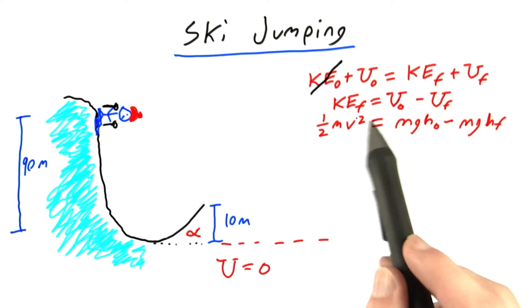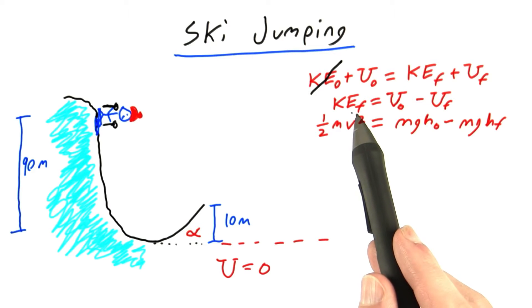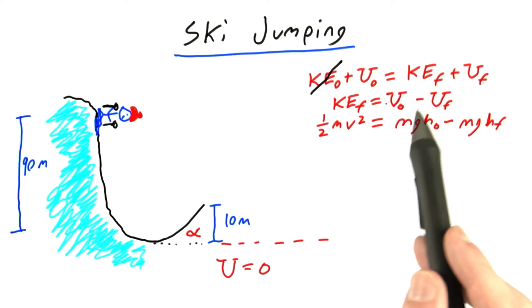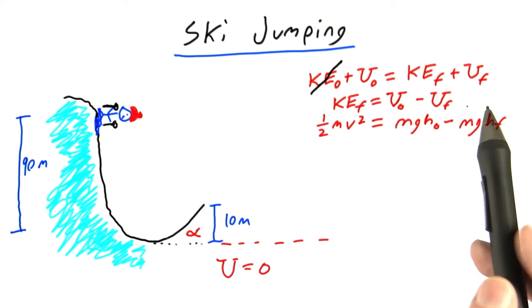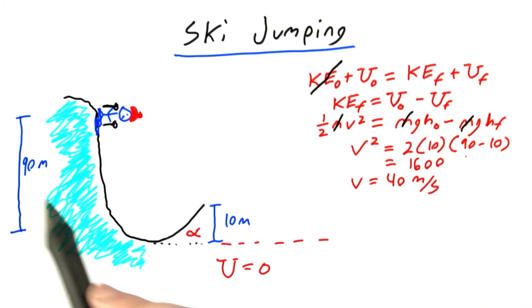Doing a little algebra, I find that his final kinetic energy equals the difference between his original potential energy and his final potential energy. Plugging in the values we were given, we find that the skier's velocity is 40 meters per second when he's leaving the ramp.